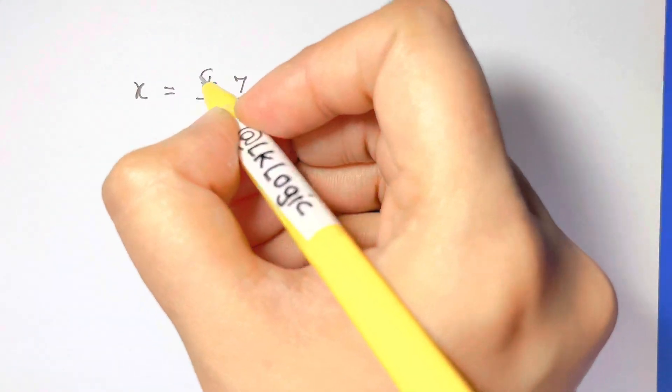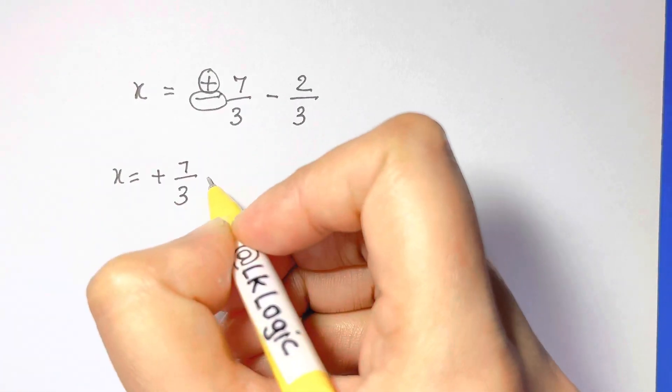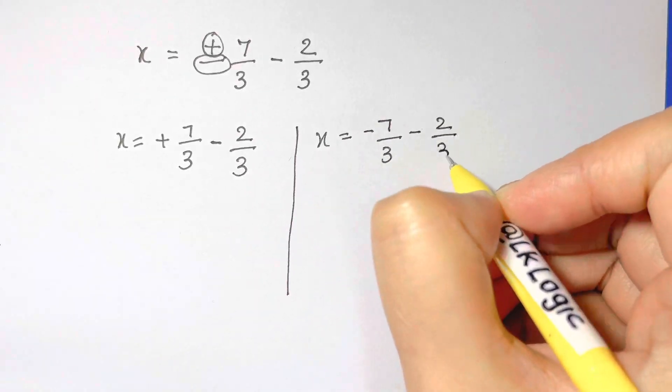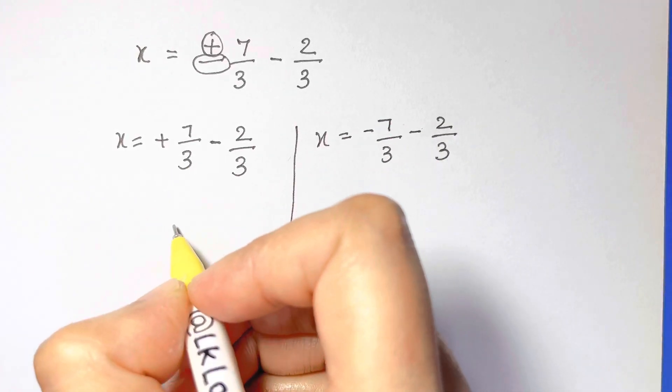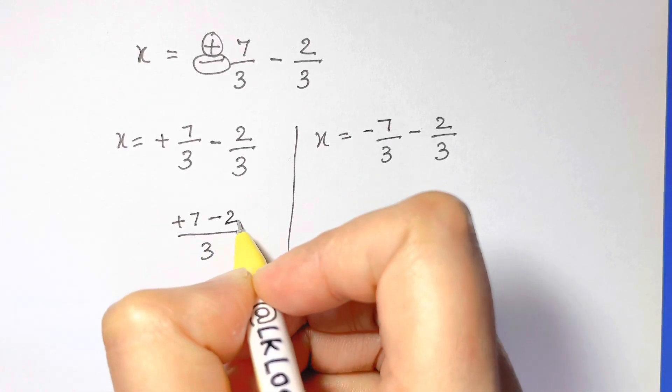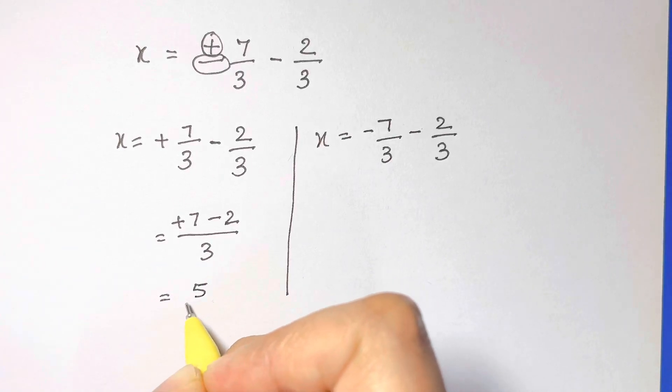Now I want you to split this positive and negative sign. So it simply becomes +7/3 - 2/3 and -7/3 - 2/3. Since we have common denominator of 3, we are going to get (7 - 2)/3, so x = 5/3.